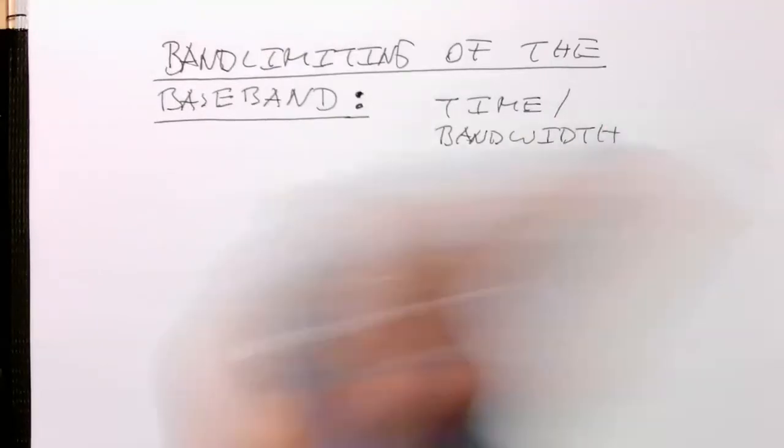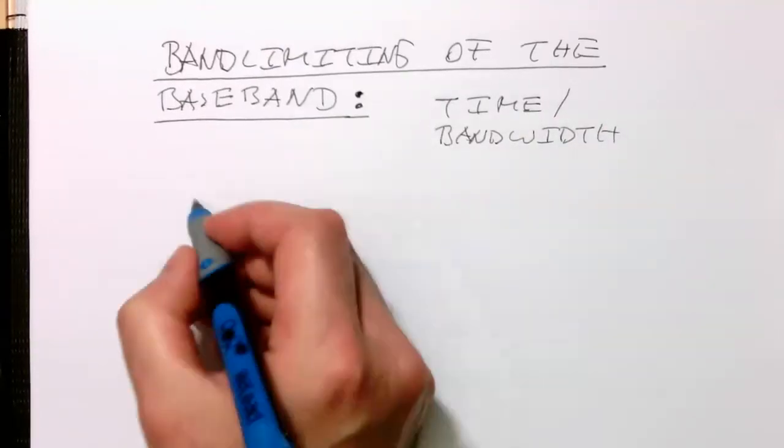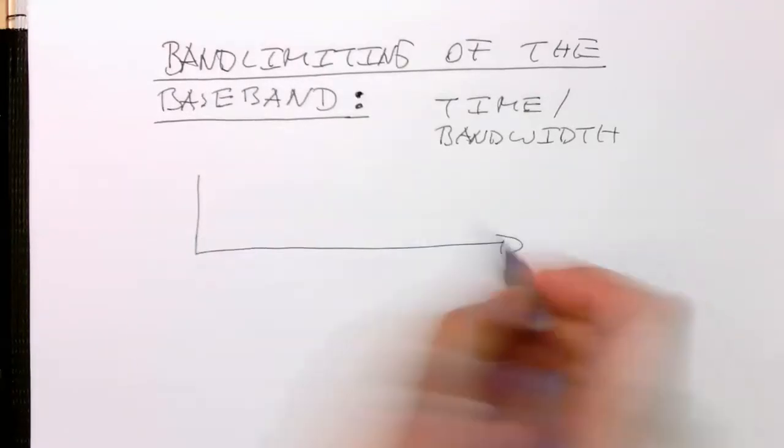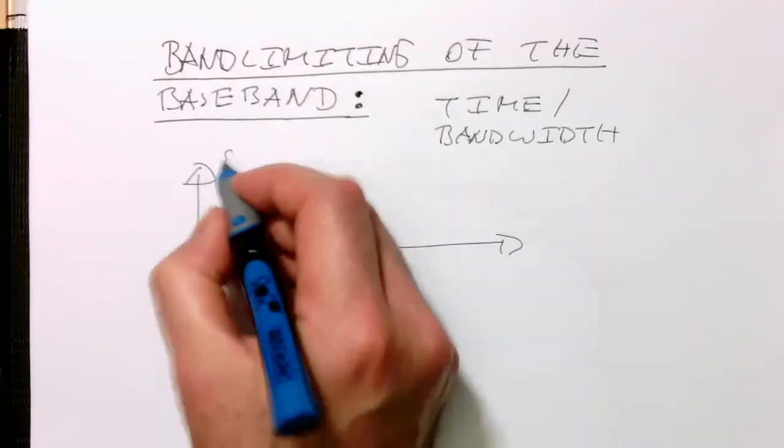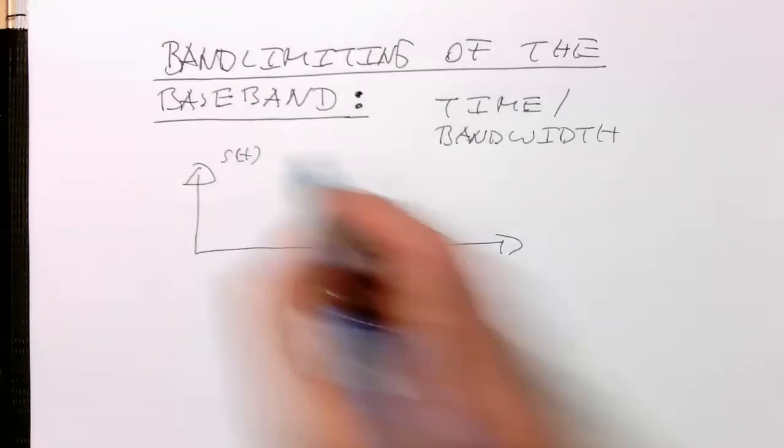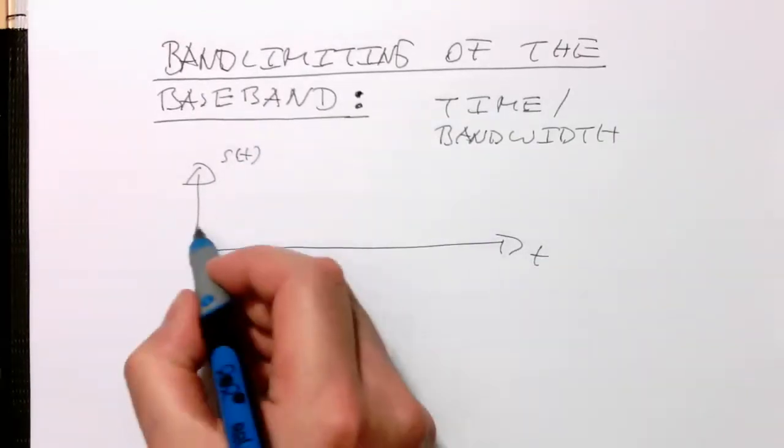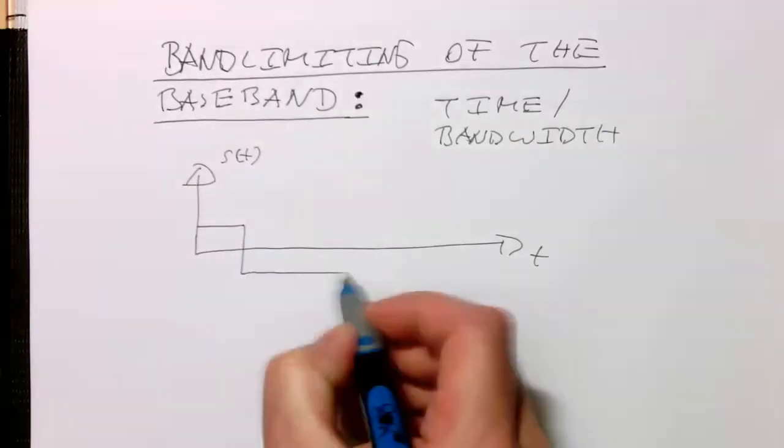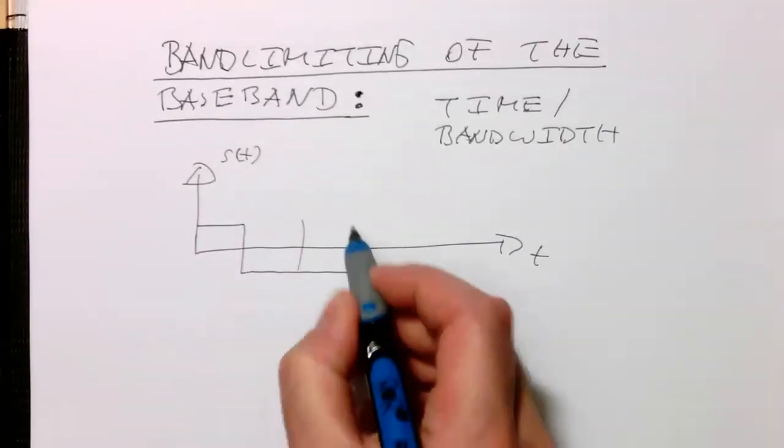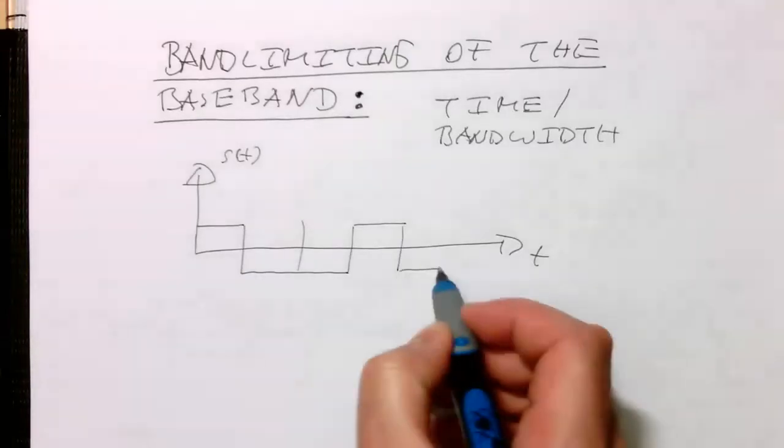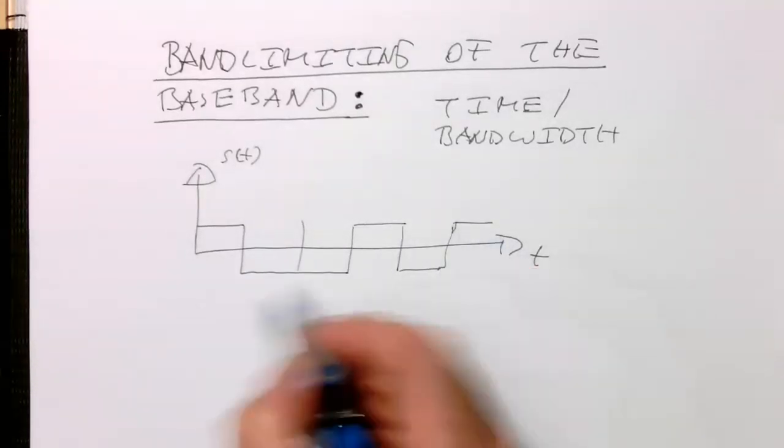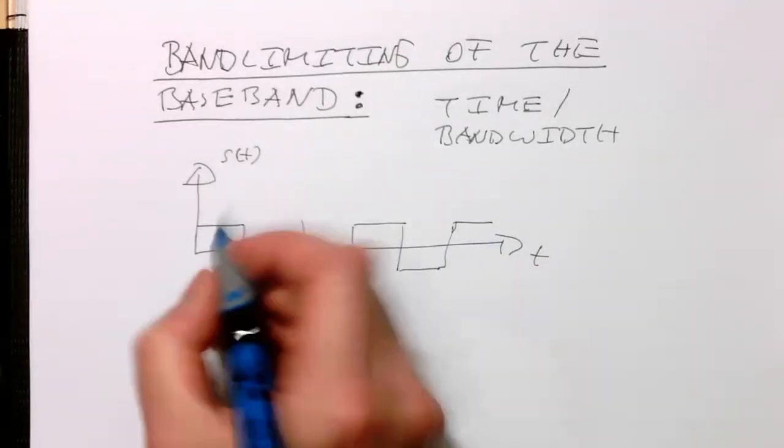So remember, our symbol stream so far was, if this is here, our S of t, a real symbol stream. And this S of t is maybe something like that. And so this would be, for example, the one.